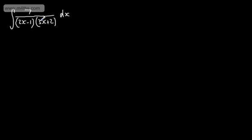If I look at this, I've got a quadratic in the denominator. Therefore, the numerator isn't a multiple of the derivative — I should have a linear term, some form of x in the numerator. Therefore, what we're going to do is use partial fractions to split this up.